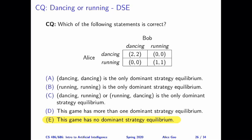If it does, then which one of the four outcomes is a dominant strategy equilibrium? The correct answer is that this game has no dominant strategy equilibrium.